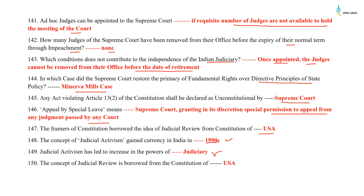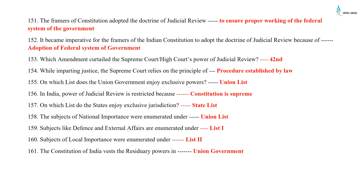The concept of judicial review is borrowed from the Constitution of the United States of America. The framers of the Constitution adopted the doctrine of judicial review to ensure proper working of the federal system of government. It became imperative for the framers of the Indian Constitution to adopt the doctrine of judicial review because of the adoption of the federal system of government. Which amendment curtailed the Supreme Court and High Court's power of judicial review? It was the 42nd Constitutional Amendment Act, 1976. While imparting justice, the Supreme Court relies on the principle of procedure established by law. On which list does the state enjoy exclusive powers? The speaker says it is the union list. In India, power of judicial review is restricted because the Constitution is supreme.